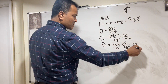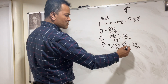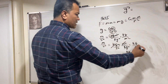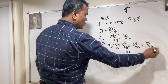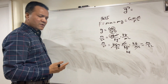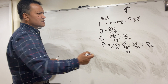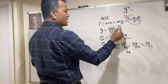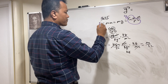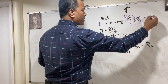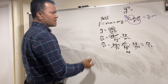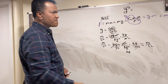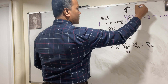Meter squared cancels with meter squared; kilogram cancels with kilogram squared leaving one kilogram, so we're left with meter over second squared — the same thing. This means g equals GM over r squared. So F equals g times m, which is F = mg, and therefore g equals F over m.